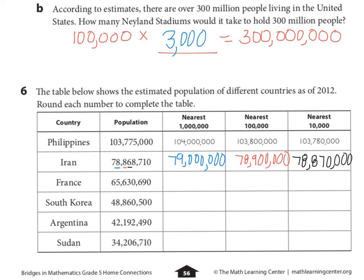Looking at France: rounding to the nearest one million — I look to the right and see a six, so the five becomes a six. Make sure you hold all other place values with zeros. Rounding to the nearest one hundred thousand: I look to the right, I see a three — stays the same — sixty-five million, six hundred thousand. Rounding to the nearest ten thousand: I look to the right, I see a zero — stays the same — sixty-five million, six hundred thirty thousand.